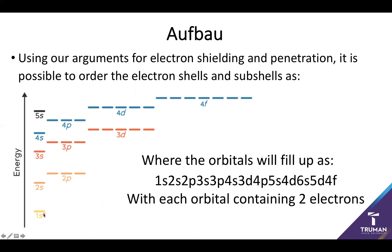S has only a single orbital, P has three, D orbitals have five, and F orbitals have seven. Because M_L = 0 for s; M_L = +1, 0, -1 for p; M_L = -2 to +2 for d; M_L = -3 to +3 for f. And then each of these orbitals contains two electrons — one up, one down.